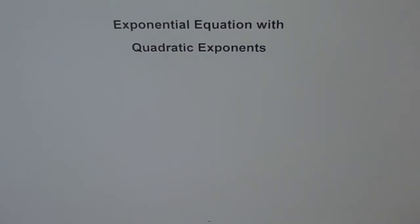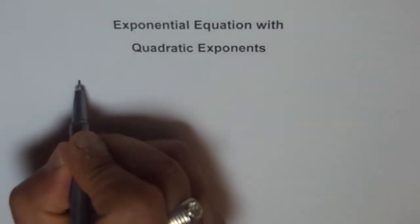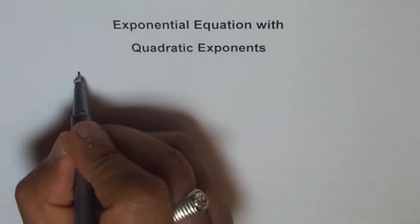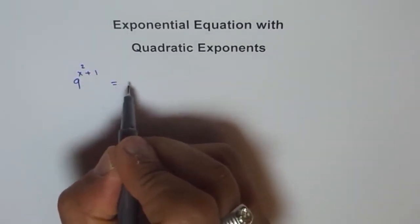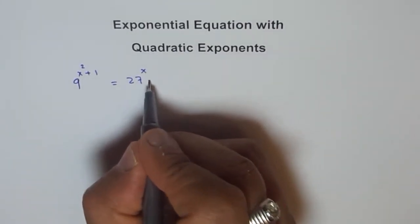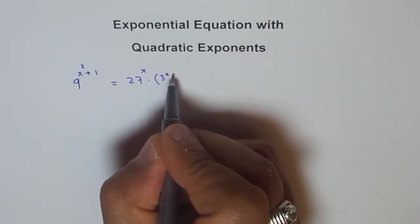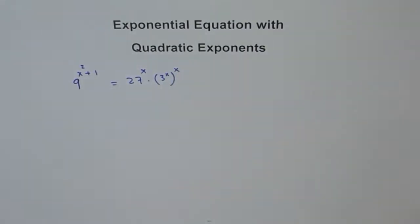Now, we will try to solve an exponential equation with quadratic exponents. Let me write down the problem for you. So, let us consider 9 to the power of x squared plus 1, equals to 27 to the power of x, times 3 to the power of x squared. Here we have a higher degree of x in the exponent.